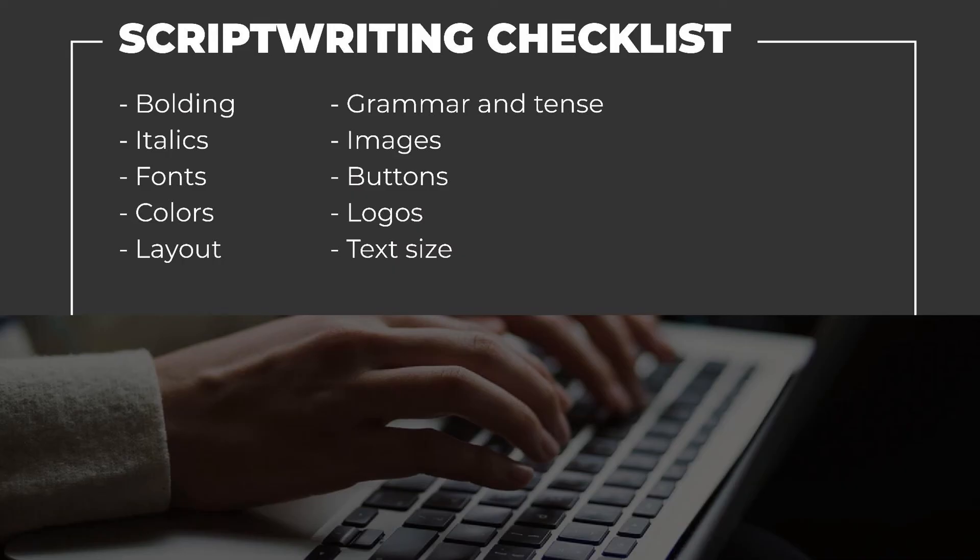Here is a list of items you should check before submitting your script for review. 1. Bolding — do you want to use it for emphasis, as a heading for sections, or to indicate actions? 2. Italics — are hyperlinks italicized? What about names of documents, screens, and systems?